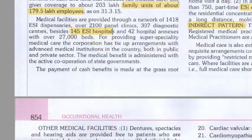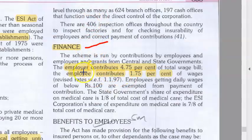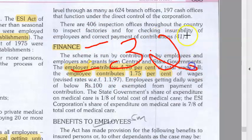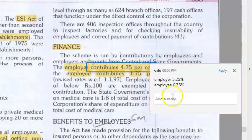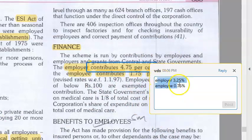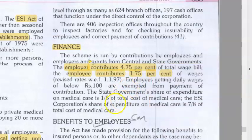Coming to finance, this is very important. The employer contributes 3.25% — that is the updated figure — and the employee contributes 0.75%, adding up to 4% total. Remember this update: employer 3.25%, employee 0.75%.